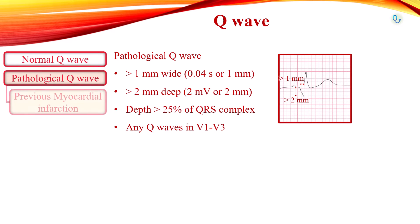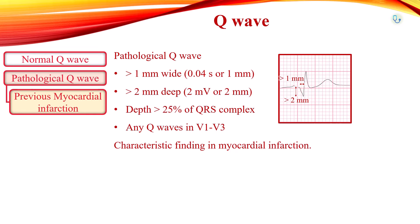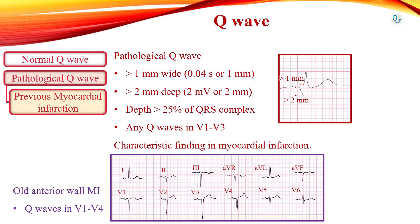Pathological Q-waves are a characteristic finding in myocardial infarction. However, they are not an early sign — it takes several hours to days to develop Q-waves in myocardial infarction. Once Q-waves have developed, they rarely disappear.